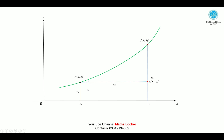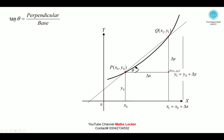We mark angle theta, with horizontal length Δx and vertical height Δy. Drawing a secant line through points P and Q forms a right triangle PQA. By trigonometry, tan(θ) = perpendicular / base = Δy / Δx. Rearranging, Δy ≈ Δx · tan(θ).